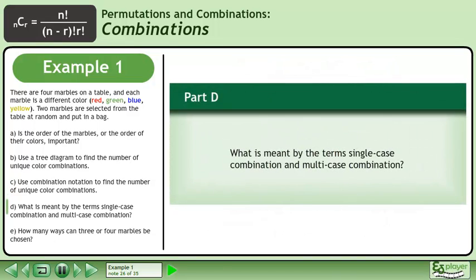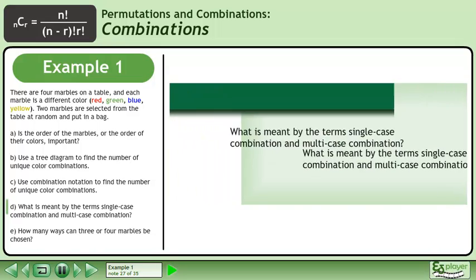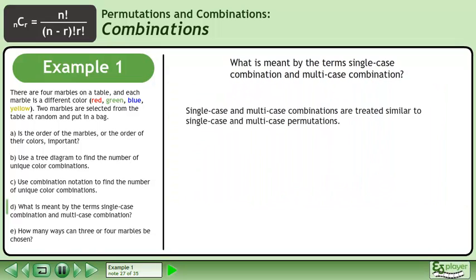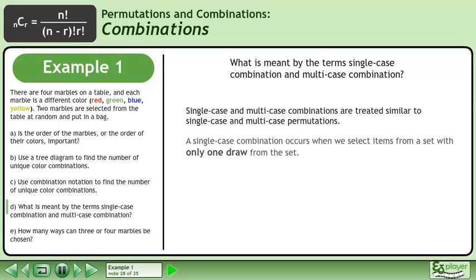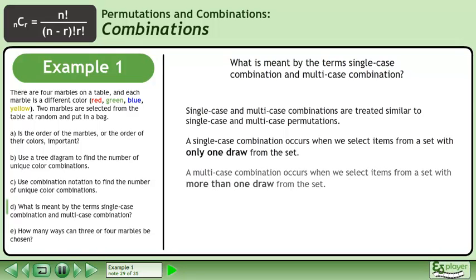In Part D, what is meant by the terms single-case combination and multi-case combination? Single-case and multi-case combinations are treated similarly to single-case and multi-case permutations. A single-case combination occurs when we select items from a set with only one draw from the set. A multi-case combination occurs when we select items from a set with more than one draw from the set.